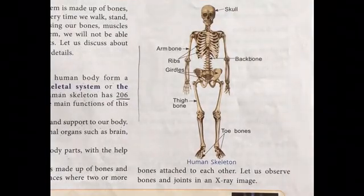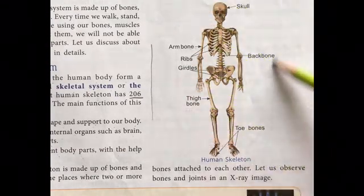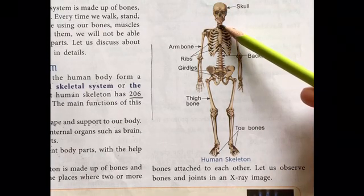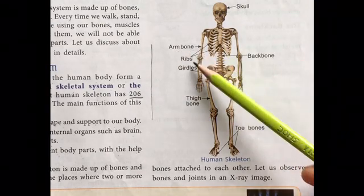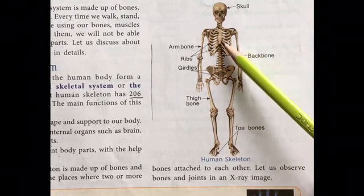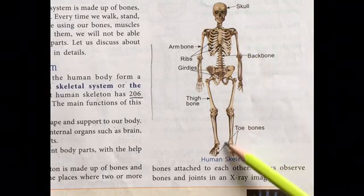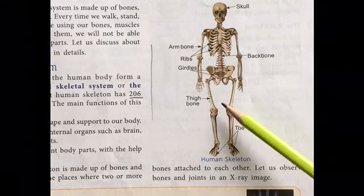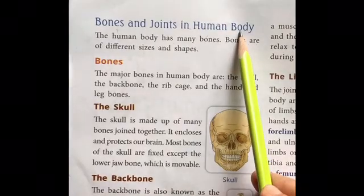You can see in the diagram — this is the skull, this is the whole skeletal system. Above the neck is called the skull, this is the arm bone, and these are the ribs. Below this we have the girdles, and in the back we have the backbone. Then we have the toe bones and the thigh bone. The thigh bone is the longest bone in our body.